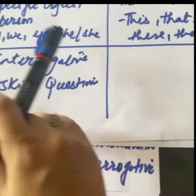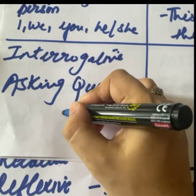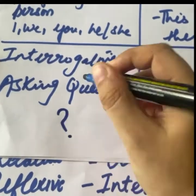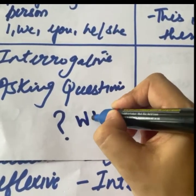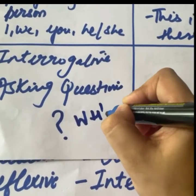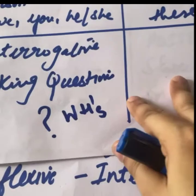Uske baad humara interrogative pronoun aata hai. Interrogative mein questions aate hain — what, where, how, when, why — inhe hum WH-questions bolte hain.